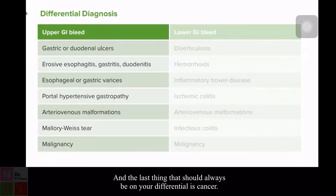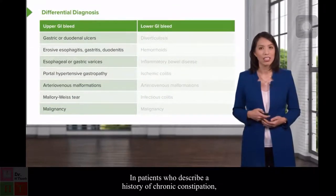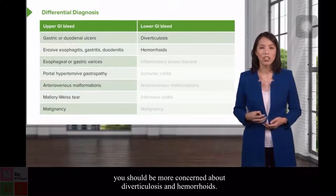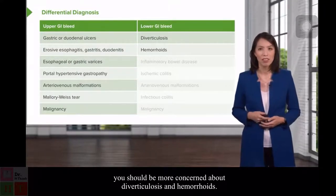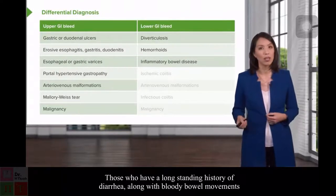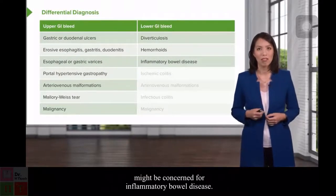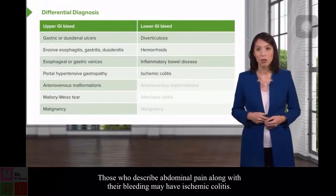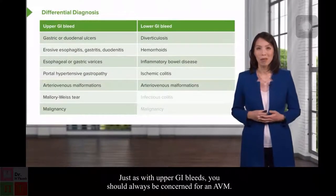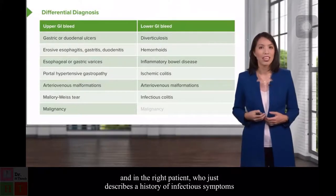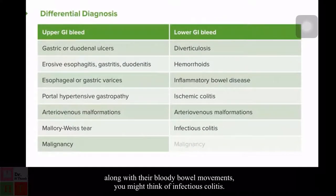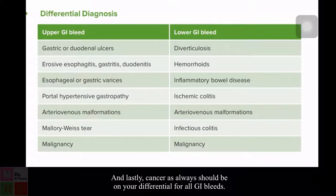Now let's move to lower GI bleeds. In patients with chronic constipation, be more concerned about diverticulosis and hemorrhoids. Those with a long-standing history of diarrhea along with bloody bowel movements might be concerned for inflammatory bowel disease. Those describing abdominal pain along with their bleeding may have ischemic colitis. As with upper GI bleeds, always be concerned for an AVM. In the right patient with infectious symptoms along with bloody bowel movements, consider infectious colitis. And cancer, as always, should be on the differential for all GI bleeds.